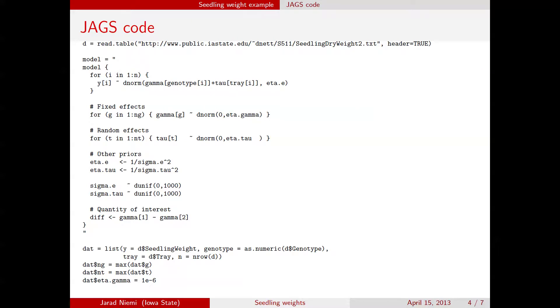So we can code this up in JAGs, the first line up here reads in the data set. The second bit of code here defines the model in JAGs code. So here we have the weight for seedling i, normally distributed, its mean depends on the genotype, as well as the tray, and the precision for this normal distribution is eta e.